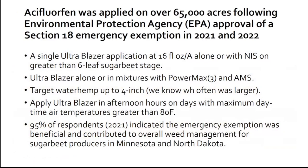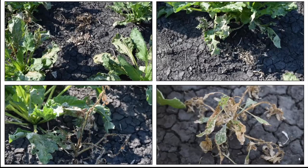UltraBlazer was applied on over 65,000 acres following EPA approval of a Section 18 emergency exemption in 2021 and 2022. We were allowed a single application at a 16-ounce rate at the six-leaf stage or greater. You could tank mix with glyphosate, and we recommended targeting waterhemp up to four inches tall. 95% of survey respondents in 2021 thought the Section 18 was useful and contributed to overall weed management in Minnesota and North Dakota. From grower fields, we see dead waterhemp — but also plants shielded by the sugar beet, and regrowth when we have incomplete coverage. Those weeds come back with a vengeance.